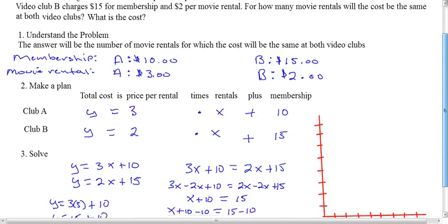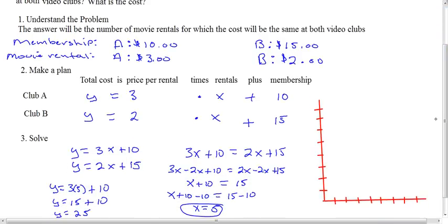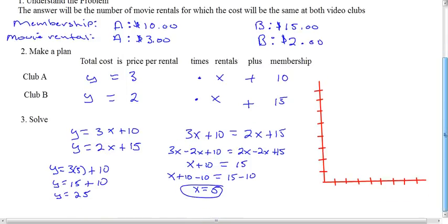So our next step is to literally solve. So here, I'm just putting my equation down closely so we can really take a look at them. Y equals 3X plus 10, and Y equals 2X plus 15. So as you can see, I've already pre-checked everything for us. So we can go ahead and be expedient with this. But let's go ahead and take a look at the graph.